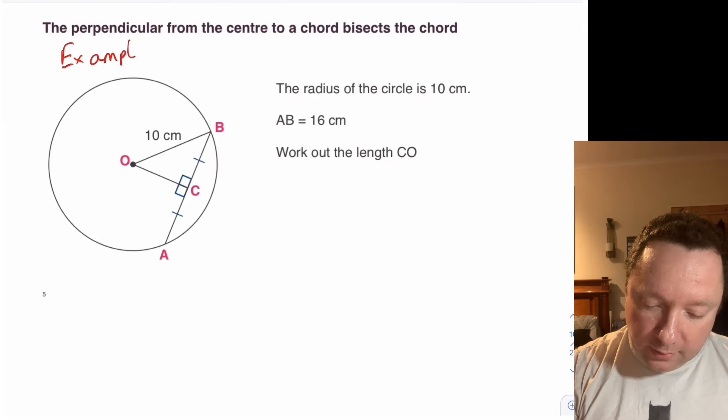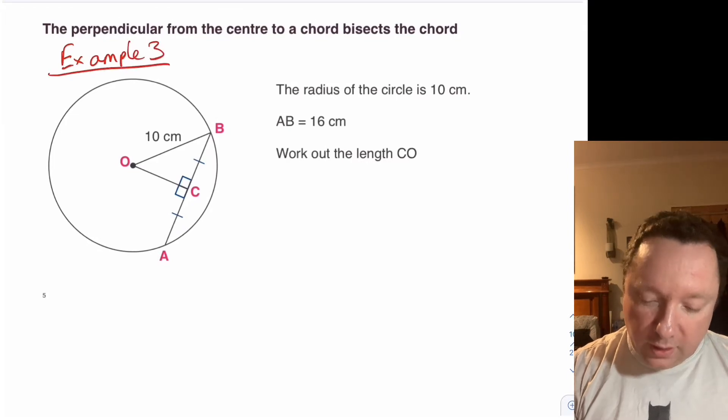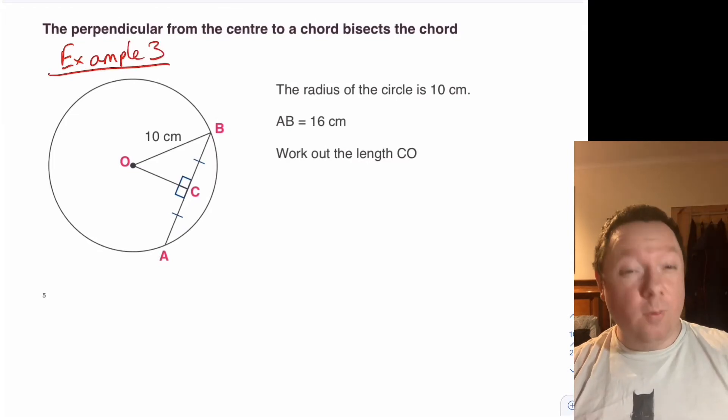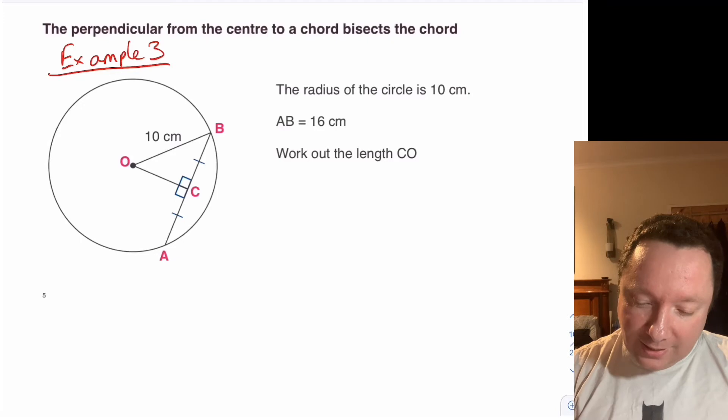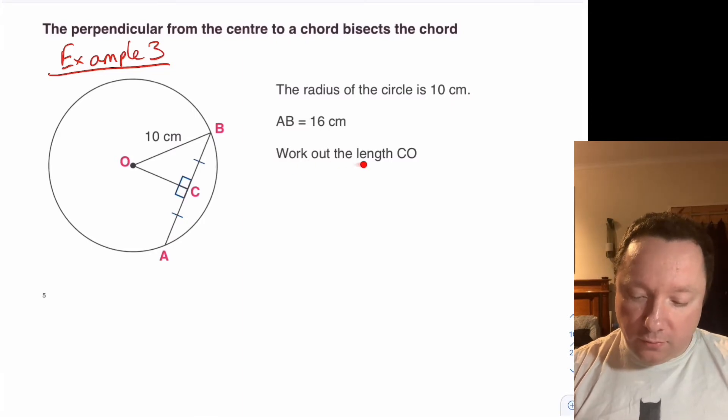So example three is where we're meeting Pythagoras. This is where it starts to get a little bit trickier. You need to use a bit more maths. It says the radius of the circle is 10 centimetres and it's drawn here. It says the length of AB is 16 which is drawn here. And you have to work out the length of CO which is this line here.